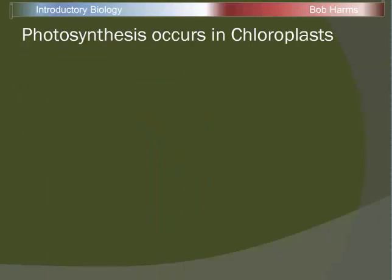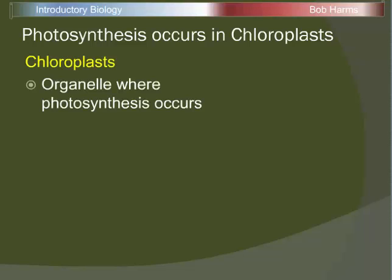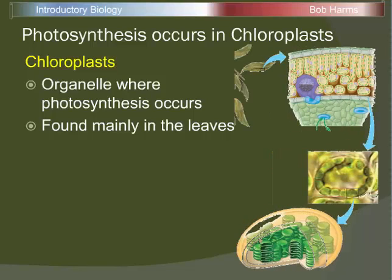Much like mitochondria are associated with cell respiration, in plants and protists, chloroplasts are the organelle where photosynthesis occurs. This is a complex metabolic pathway — lots of different chemical reactions all contained within these chloroplasts. The chloroplasts are found in the cells that make up the leaves, and each cell has hundreds of chloroplasts in it. These chloroplasts are small and green.